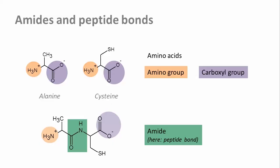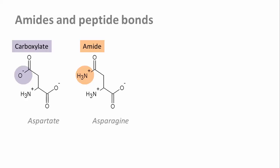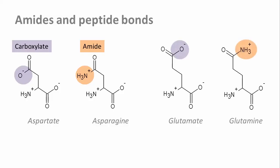A carboxyl group can be turned into a so-called amide if one of the oxygens is swapped for a nitrogen. Two amino acids come in both a carboxylic acid form and an amide form: aspartate and asparagine, and glutamate and glutamine. We'll meet them again in a later lecture.